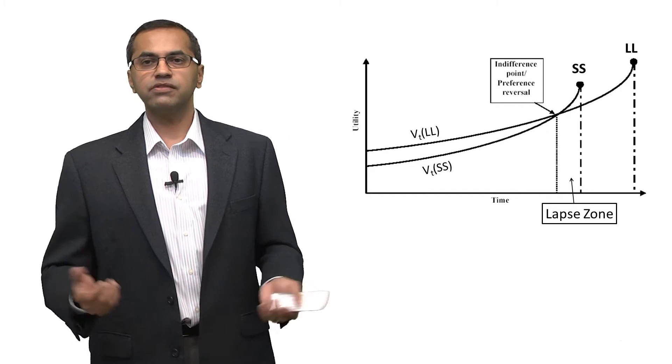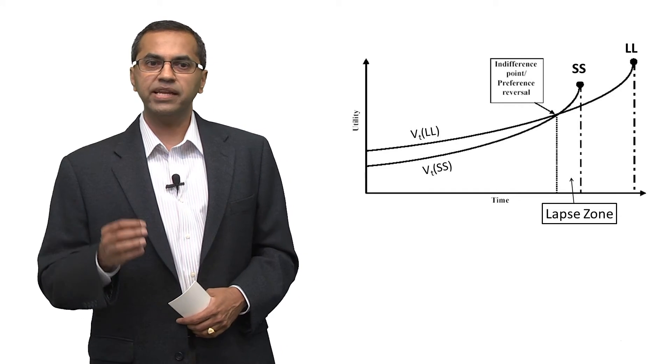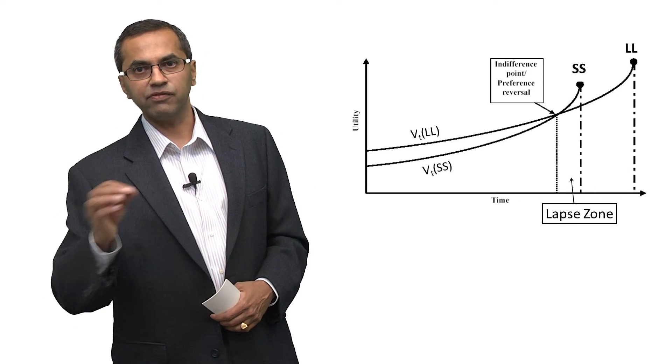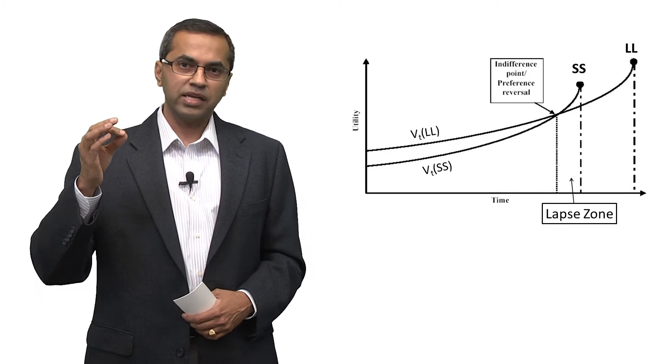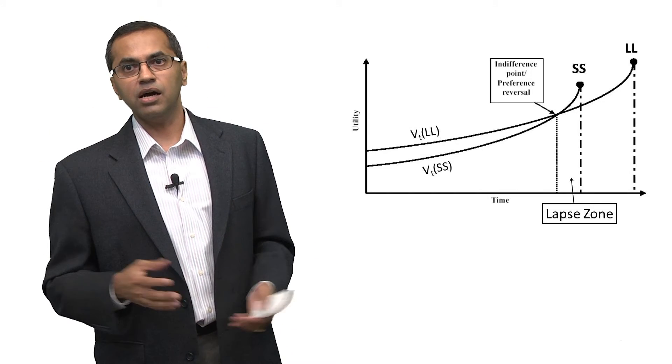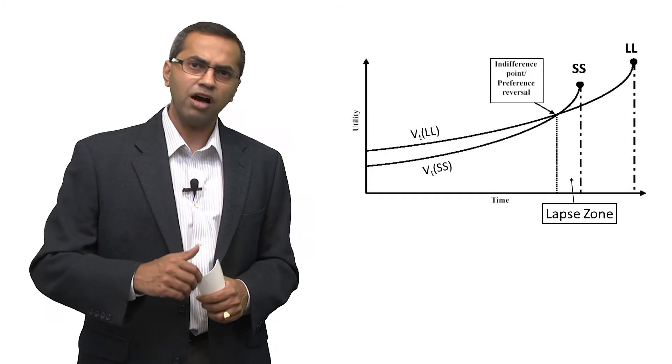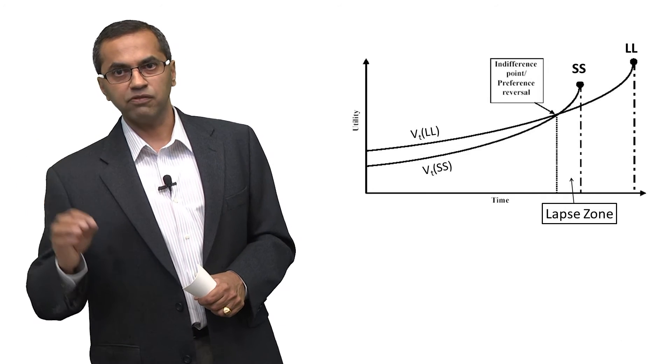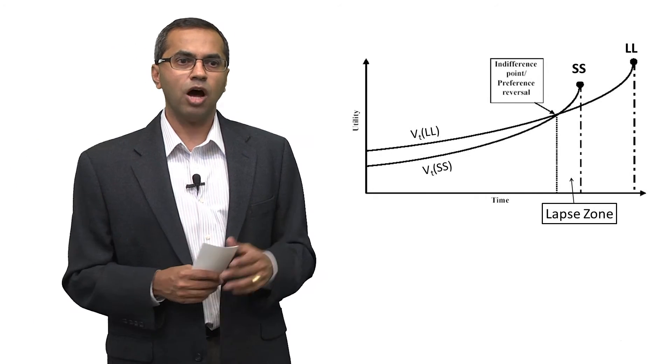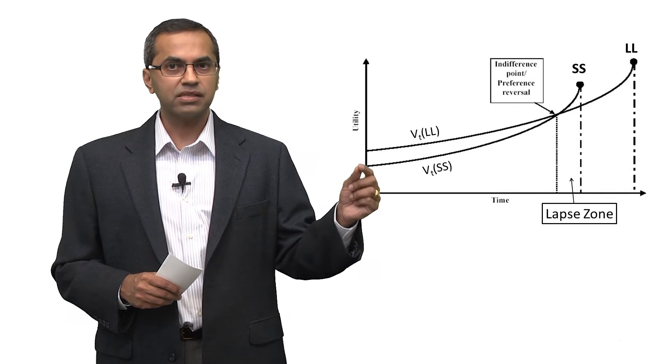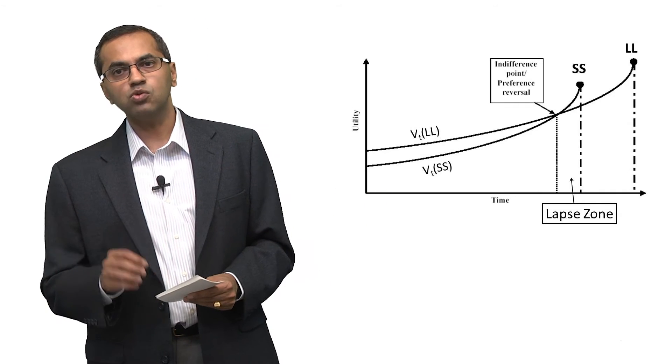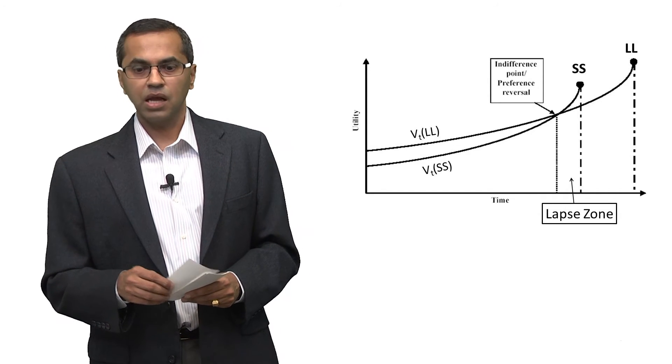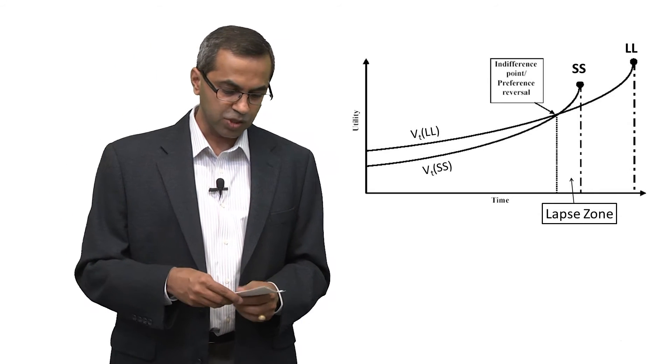If you think about it, SS and LL are metaphors for all kinds of things in life. SS could be getting the tasty chocolate cake now. LL could be having a healthier life in the future. SS could be working hard at a given point in time and then goofing off. LL could be keeping working hard and making sure you have a secure future. And so at many points in time, when we look at options that are in the future, we can see that LL is better than SS. But as soon as we get closer to SS, the tempting option, we choose it. Why does that happen? Why do we fall into lapsed zones? Well, there are three reasons.